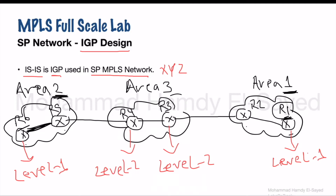Level 2 routers are responsible for letting all types of ISIS routers communicate with each other. Level 2 routers have detailed information about routes within their area and routes outside their area. Here, R3 and R4 are Level 2 routers — they can have information about routes inside Area 3, and also receive specific information about routes outside their area, such as the link between R1 and R2 in Area 1, and the route between R5 and R6 in Area 2. Level 2 routers are called backbone routers and must have sufficient processing and memory.